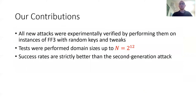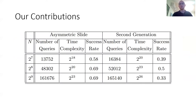All of our contributions were experimentally verified simply by simulating them many times over random keys and tweaks. We also got success rates that are strictly better than the second generation attack, as can be seen in this table. On the left side, you can see our asymmetric slide, and on the right side, you can see Hoang et al.'s second generation attack. As you can see, the number of queries and time complexity are significantly lower, while the success rate is higher.